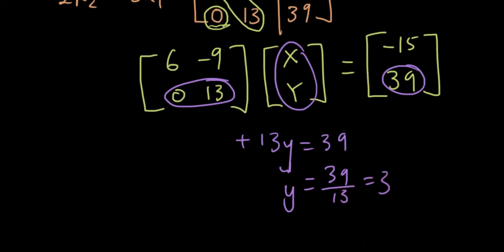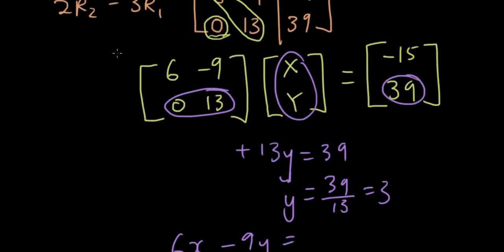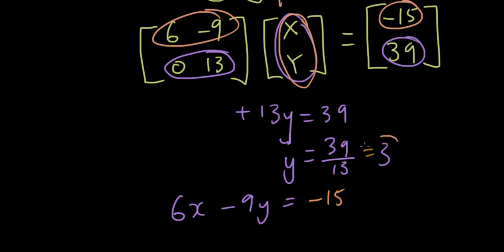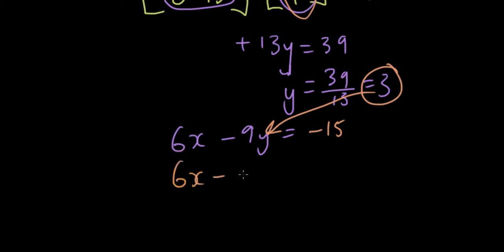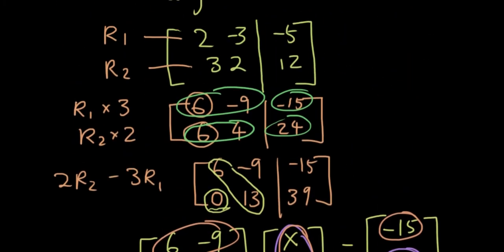And now we have 6x minus 9y equals negative 15, because you're multiplying out the first row in the first column and you get that result. So then we just substitute the 3 into where y is. So it's 6x minus 27 is negative 15. 6x equals negative 15 plus 27, which is 12. And x is equal to 12 over 6, which is 2.